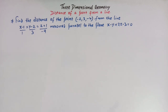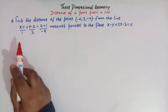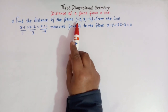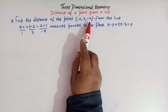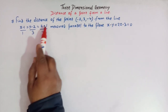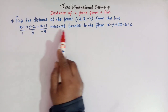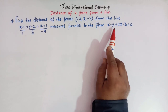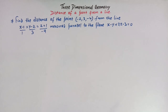Let us first read out this problem. We have to find the distance of the point (-2, 3, -4) from a given line, measured parallel to the plane whose equation is given. Let us first see the rough diagram of this problem and see how we can solve it.